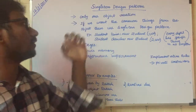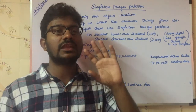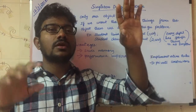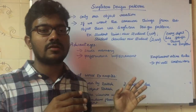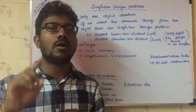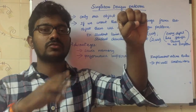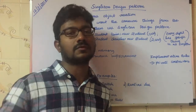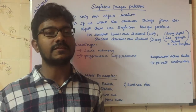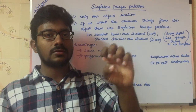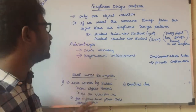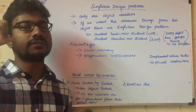Now let's cover the advantages of the Singleton design pattern. Since JVM allows only one object creation, it saves memory. As discussed earlier, if you want to create five objects they consume five objects' worth of memory, but with Singleton only one object is created, so the remaining four objects' memory can be used for other purposes. The second advantage is performance improvement — creating an object requires some CPU, so fewer object creations improve overall performance.